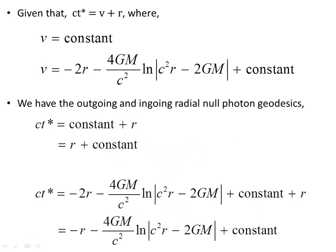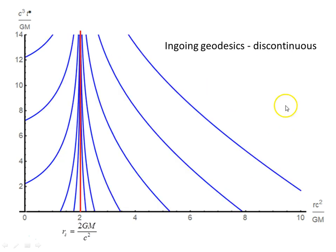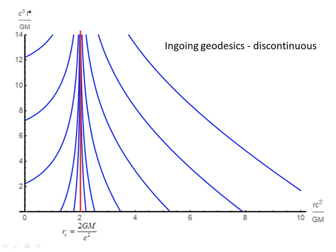The outgoing geodesics are continuous at the Schwarzschild radius 2GM on c squared — there is no longer a singularity there. However, the ingoing geodesics are still discontinuous at 2GM on c squared, the Schwarzschild radius, and this will have some interesting consequences.